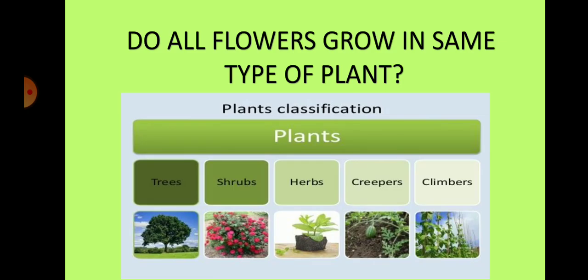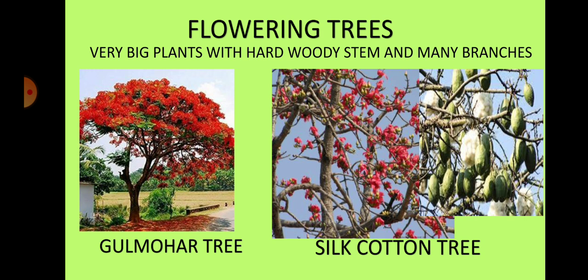Children, do all flowers grow in the same type of plant? No. As you all know, plants are of different types: trees, shrubs, herbs, creepers, and climbers. Look here — these are flowering trees. What are trees? Very big plants with hard, woody stem and many branches are called trees. Gulmoha tree and silk cotton tree are flowering trees.